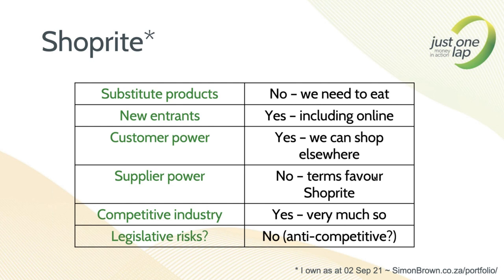Supplier power for ShopRite: no — the power sits completely with ShopRite. If you've got a new product and want to sell it through ShopRite, you pay to get on their shelves and pay per meter. They have all the power in that relationship. Competitive industry: yes, very much so, but threats come from online and other delivery methods. Are we going to see a Kroger from the US or a Sainsbury's from the UK arrive here? Not likely. That high competitiveness creates a barrier to entry. Legislative risk: no, but the 'but' is perhaps anti-competitive concerns — if they tried to buy Pick n Pay, competition authorities would block it.